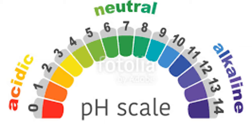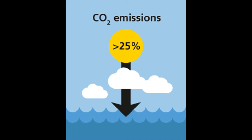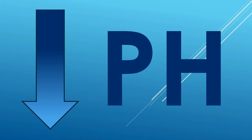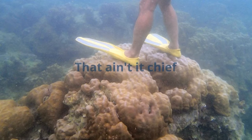Ocean acidity is also related to coral death. When the ocean absorbs CO2, it lowers the pH in the water, or in other words, makes the water more acidic. This burns through the coral bone and degrades it.